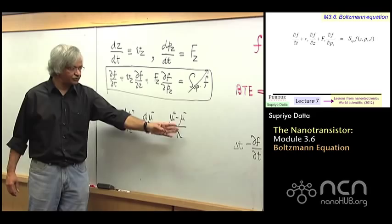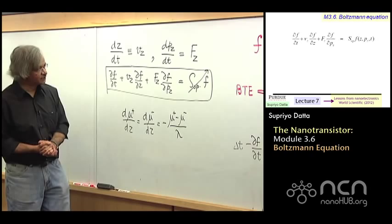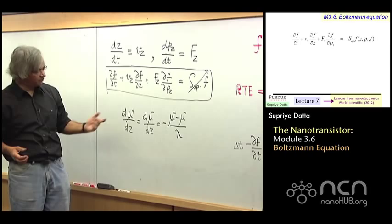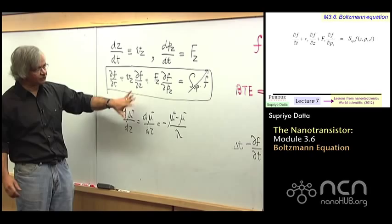Make some simple approximations to this scattering operator. If it's ballistic, then, of course, I just set it to zero. If it's diffusive, I'd make some simple approximations to this. Then, we'd say, well, let's assume the F has a certain form that can be described by a certain electrochemical potential. And that's how we'd get there.